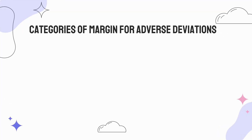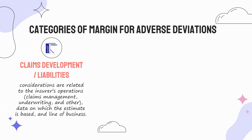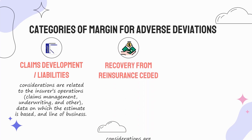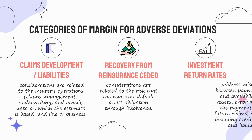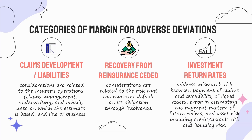There are three categories of margin for adverse deviations. The first category is claims development or liabilities, where considerations are related to the insurer's operations such as claims management, underwriting, and others, as well as data on which the estimate is based and line of business. The second category is recovery from reinsurance ceded, where considerations relate to the risk that the reinsurer defaults on its obligation through insolvency. The third category is investment return rates, which addresses mismatch risk between payment of claims and availability of liquid assets.